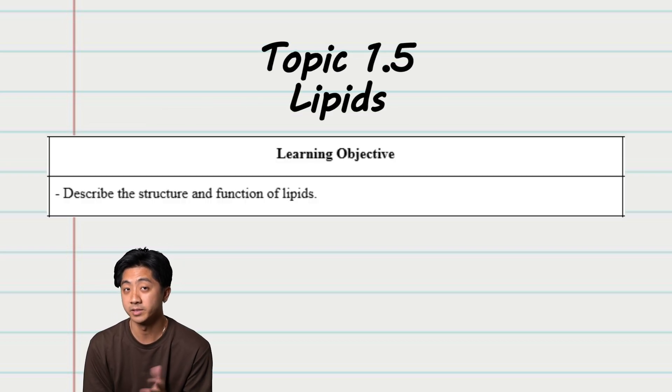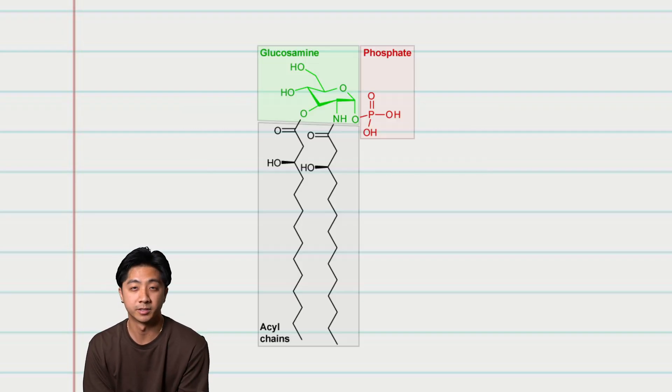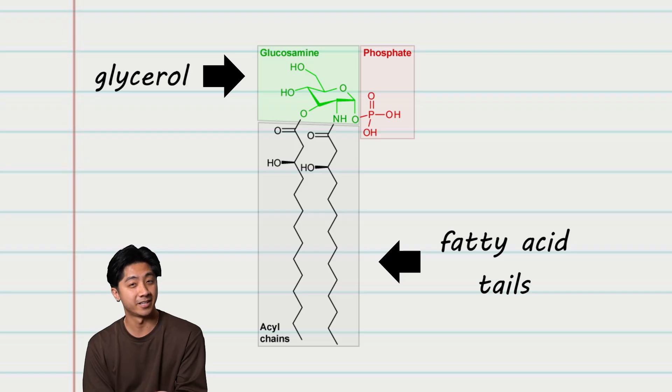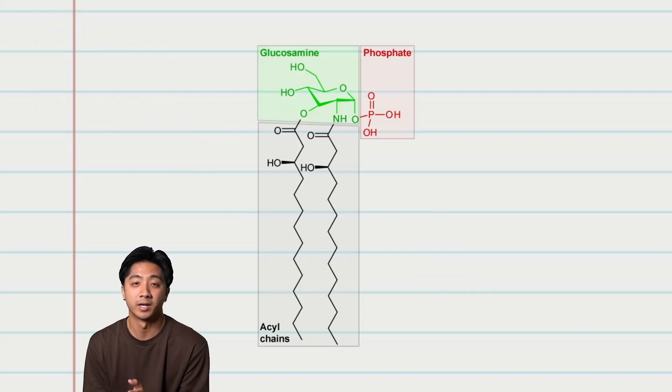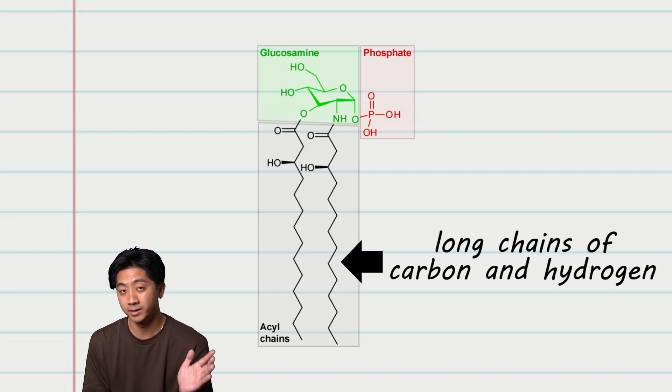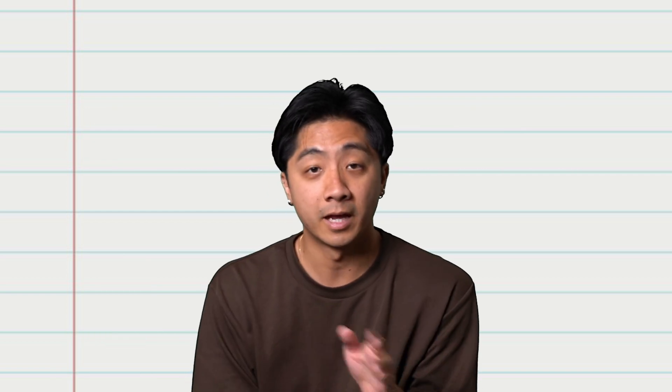Topic 1.5, lipids. Lipids do not have a true monomer, but are composed of a glycerol and fatty acid tails. Whenever you look at them, does anyone else think a little... The fatty acid tails are comprised of long chains of carbon and hydrogen. Pop quiz! This makes the tails... non-polar.